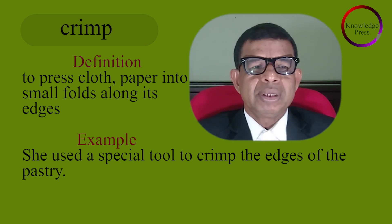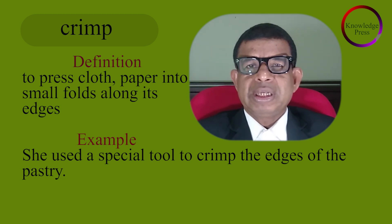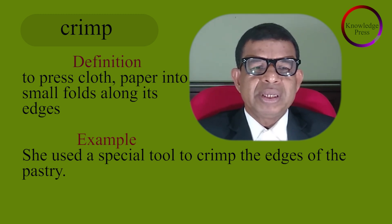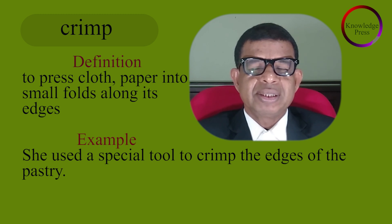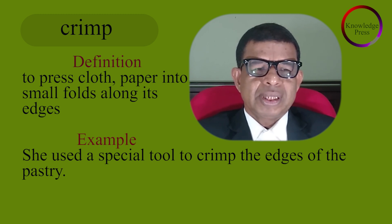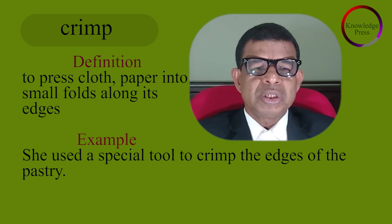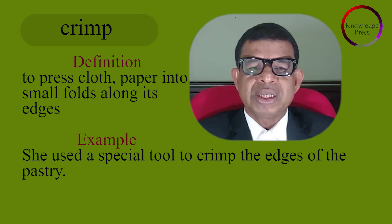Crimp: Definition — to press cloth or paper into small folds along its edges. For example, she used a special tool to crimp the edges of her pastry.